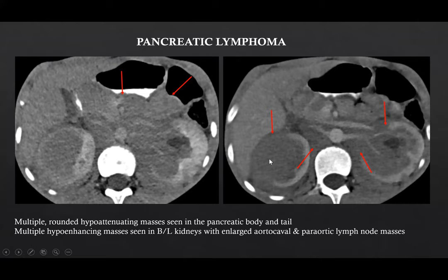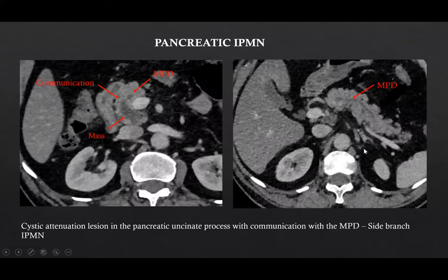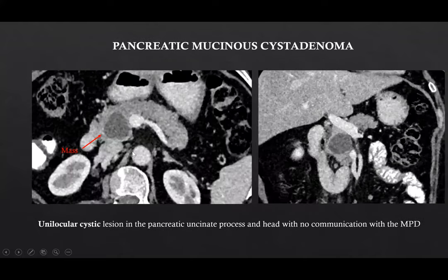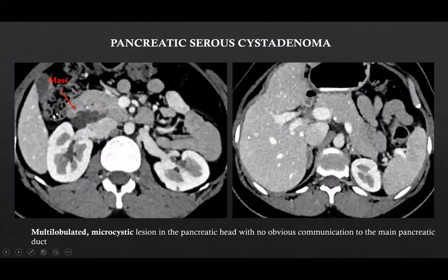Bilateral kidneys show evidence of multiple hypoenhancing masses with enlarged aortocaval and paraaortic lymph node masses. This was a case of pancreatic IPMN, where we can see a cystic attenuation lesion in the pancreatic uncinate process which is communicating with the main pancreatic duct, suggestive of a side branch IPMN. This was a case of pancreatic mucinous cystadenoma where we can see a unilocular cystic lesion in the pancreatic uncinate process and head region with no communication with the MPD. This was a case of pancreatic serous cystadenoma where we can see a multilobulated microcystic lesion in the pancreatic head with no obvious communication to the main pancreatic duct.